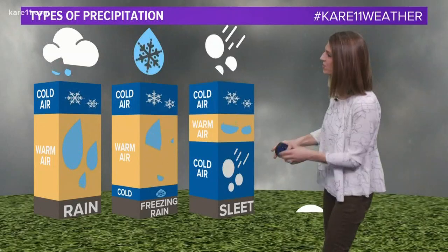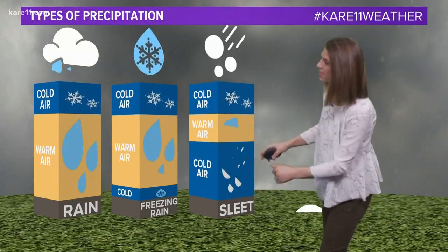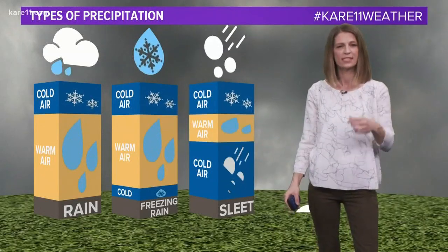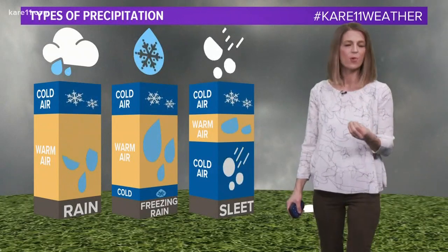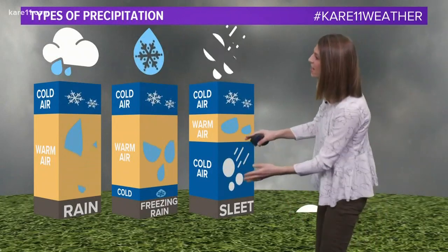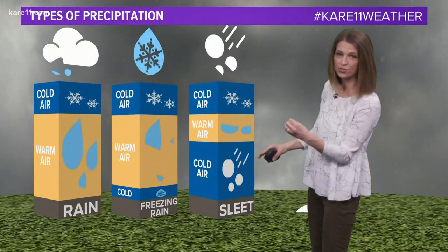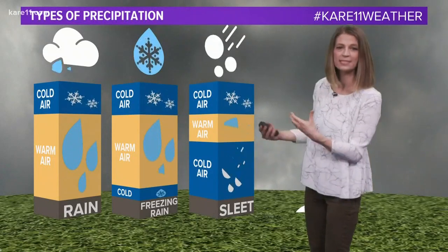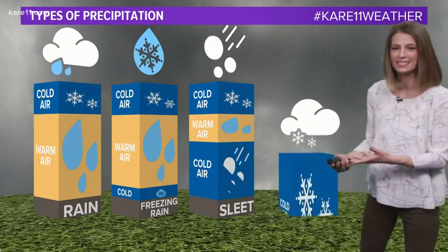Similar, but just a little different in terms of the depth of that cold layer near the surface. If it's deep enough — generally more than 800 to 1,000 feet — those raindrops freeze into solid ice balls or ice pellets. That's what we call sleet.